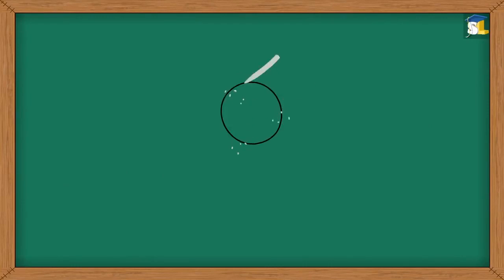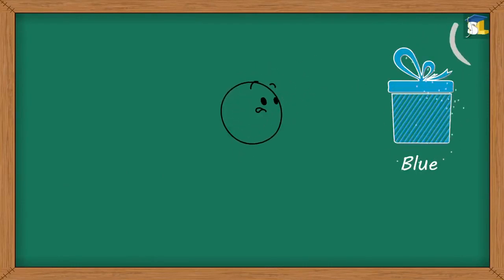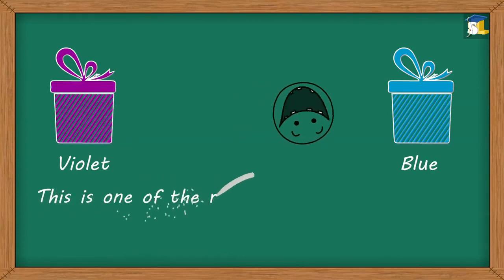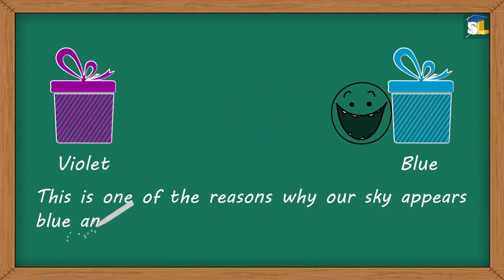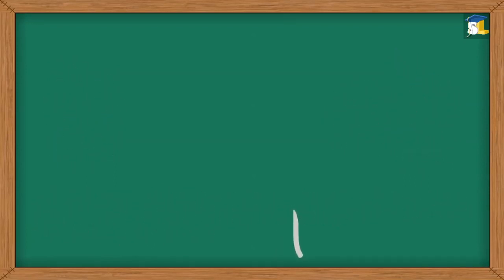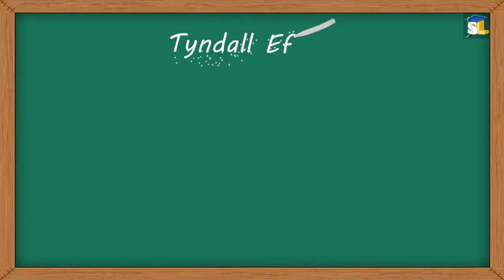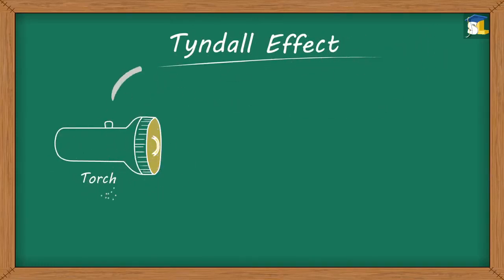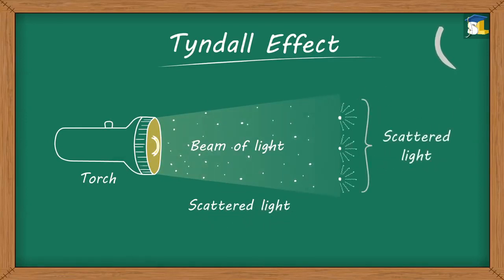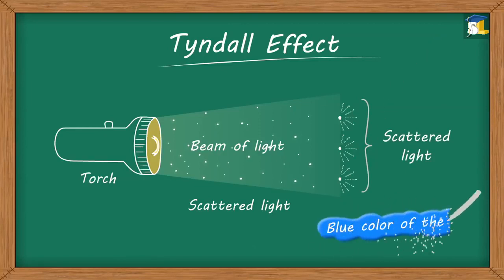Do you think that our eyes have a natural inclination towards blue as compared to violet? Yes, this is one of the reasons why our sky appears blue and not violet. To understand this, first let us study about the Tyndall effect. Tyndall effect is a phenomenon in which a beam of light scatters on striking the particles present in its path. This scattering of light is responsible for the blue color of the sky.